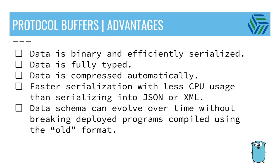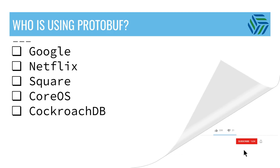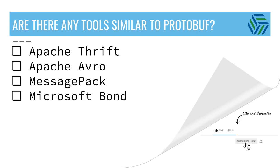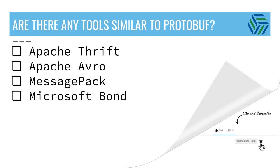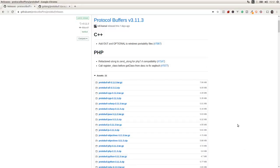Now let's see some of the advantages of using protocol buffers. Data is binary and efficiently serialized, fully typed, and compressed automatically. Data is serialized faster with less CPU usage than JSON or XML. The data schema can evolve over time without breaking deployed programs compiled using a previous version of the interface definition. Protobuf is being used in production by Google, Netflix, Square, CoreOS, and CockroachDB. Some tools similar to protobuf are Apache Thrift, Apache Avro, MessagePack, and Microsoft Bond.